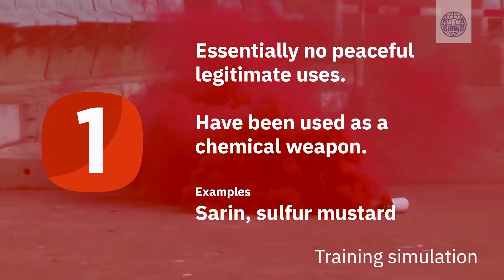Sarin, nerve agents, sulfur mustards, and blistering agents are among the Schedule 1 chemicals.